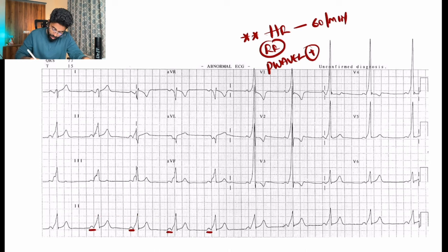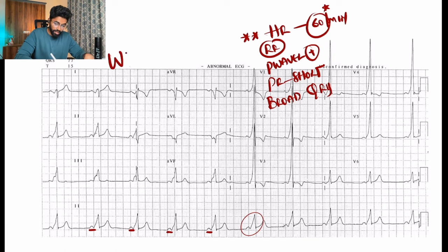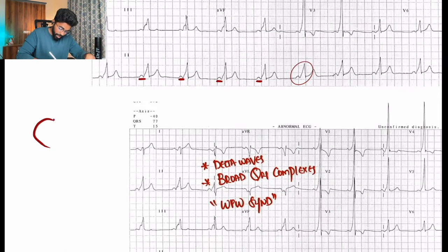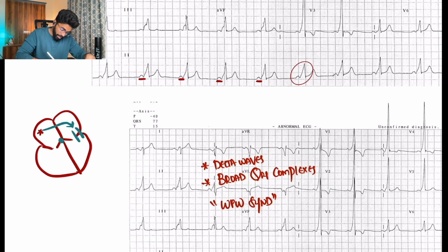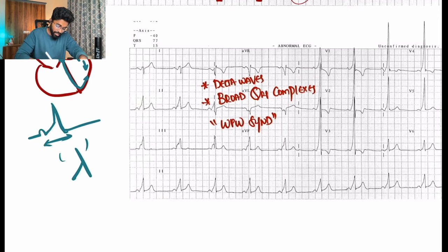For WPW syndrome: heart rate 60 per minute, regular rhythm, P wave present, very short PR interval, and clearly broad QRS. The SA node activates an accessory pathway before the AV node. As the atrium contracts, the conduction wave moves straight onto the accessory pathway, shortening the PR interval. The QRS slowly rises, producing the characteristic delta wave appearance in WPW syndrome.